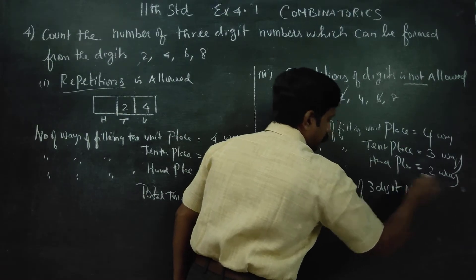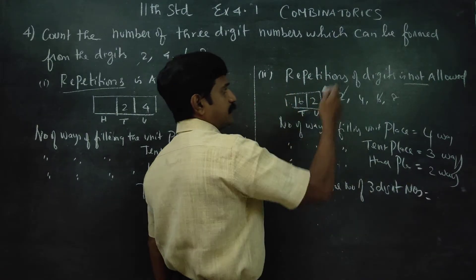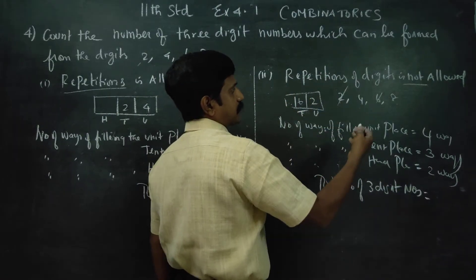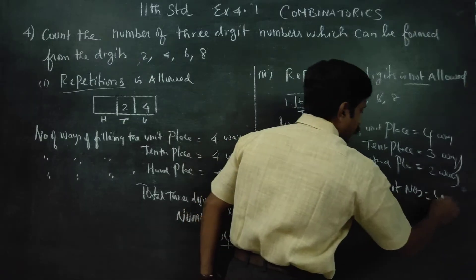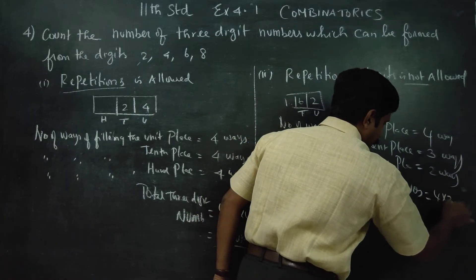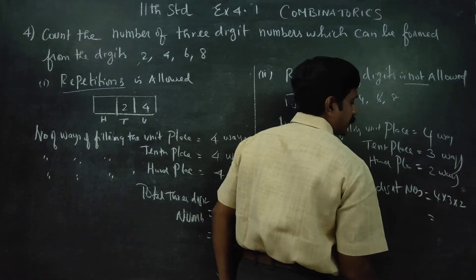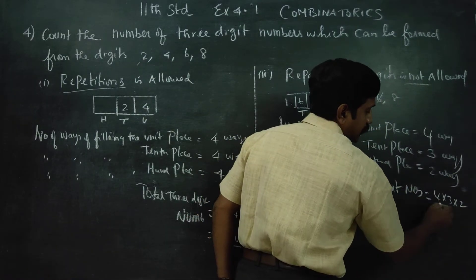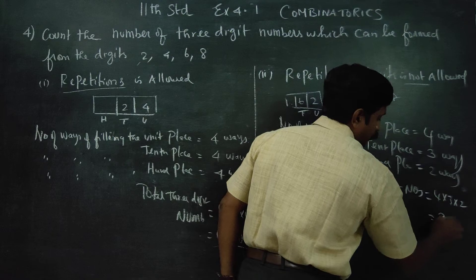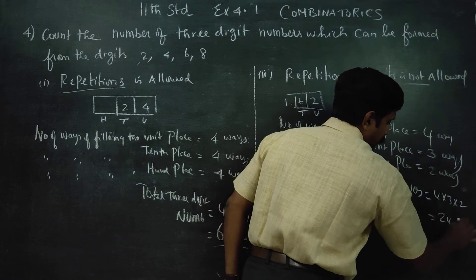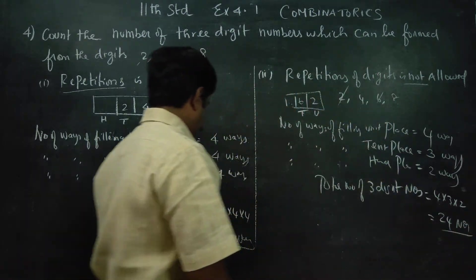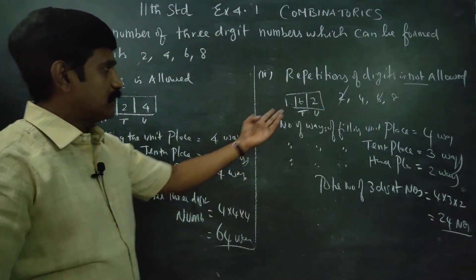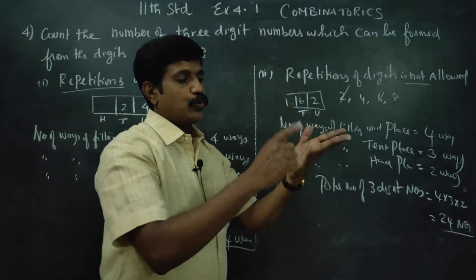Without repetition, the total number of 3-digit numbers is 4 × 3 × 2 = 24 numbers.